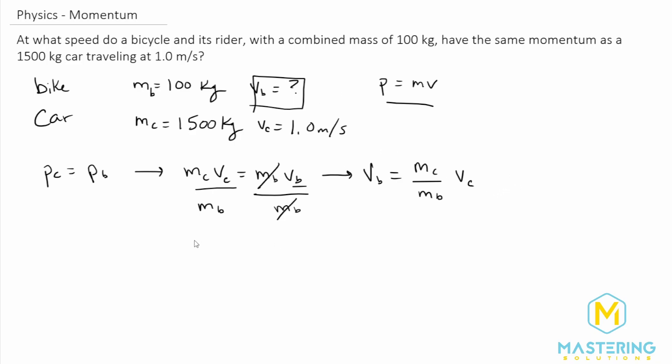So now all we have to do is plug in our list of variables into the equation. The velocity of the bike and the rider is going to be equal to 1500 kilograms for the mass of the car divided by 100 kilograms for the mass of the bike and the rider times the velocity of one meters per second.